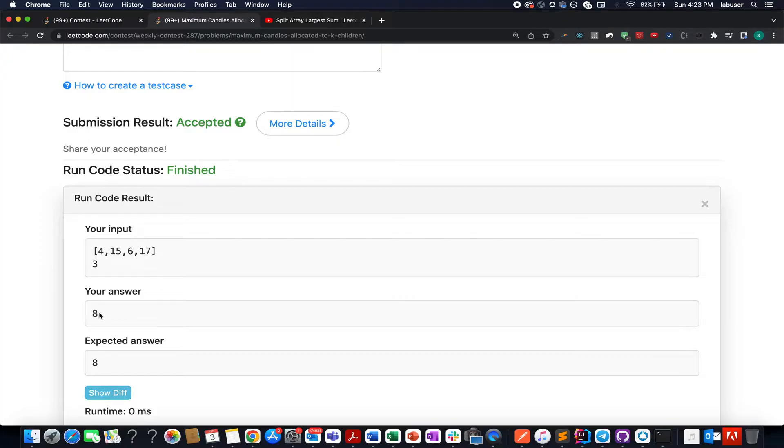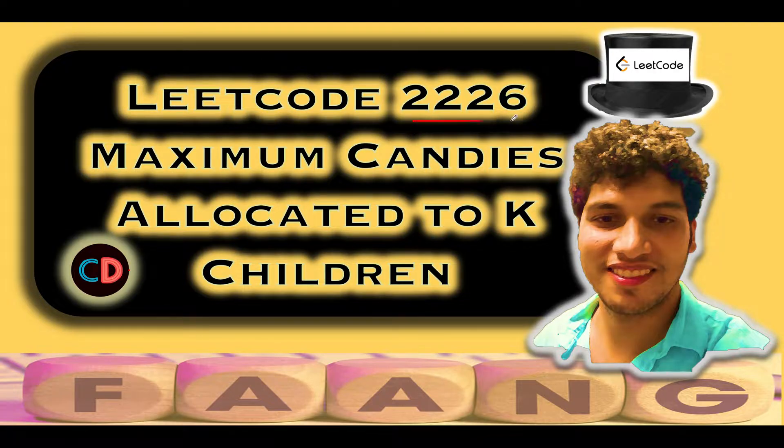Without further ado, let's quickly walk through the presentation. LeetCode 2226: Maximum Candies Allocated to K Children. We have the input piles as [4, 15, 6, 17], and the total number of children is 3. Let's hypothetically assume two numbers: low and high. Low will be equal to 1 as the default pile size, and high would be equal to the maximum element in the piles array, which is 17.